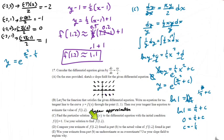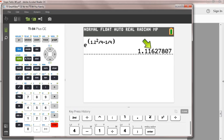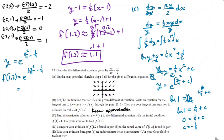Now we take this 1.2 and plug it into our particular solution to find the exact answer. F(1.2) equals E to the power of (1.2² divided by 4 minus 1/4). Using a calculator — don't forget the parentheses — that's 1.2 squared divided by 4 minus 1 fourth. The answer is 1.11627807. Rounding to three decimal places, that gives us 1.116. This is our actual answer.